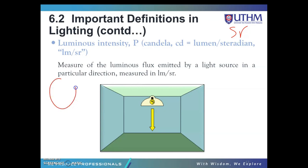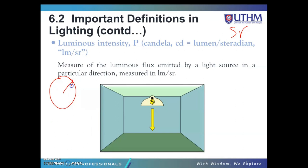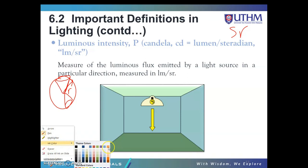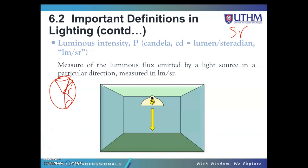The sphere has radius R, and the area A of the highlighted surface patch equals R squared. So the solid angle Ω equals A over R squared, in steradians.